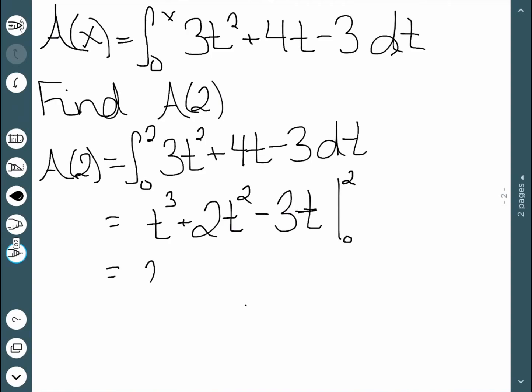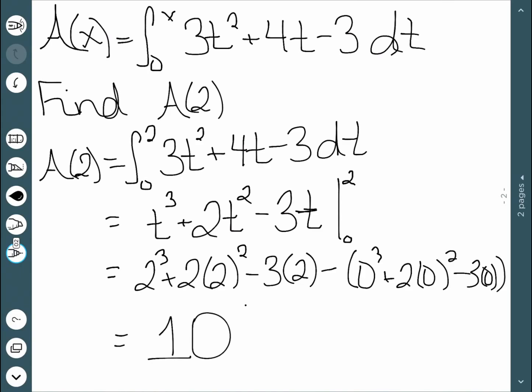And we need to take this between 0 and 2. So we stick in the upper bound, 2 cubed plus 2 times 2 squared minus 3 times 2 minus sticking in the lower bound, 0 cubed plus 2 times 0 squared minus 3 times 0. And if we work this out, we get 10. So the area of this function, 3t squared plus 4t minus 3, from 0 to 2 is 10.